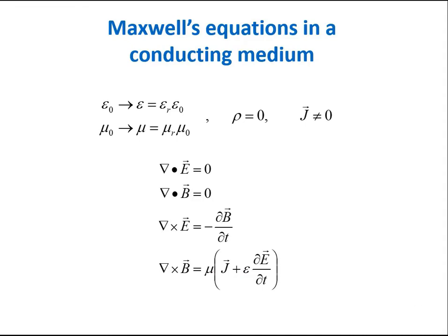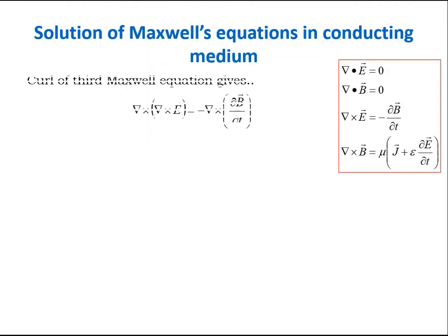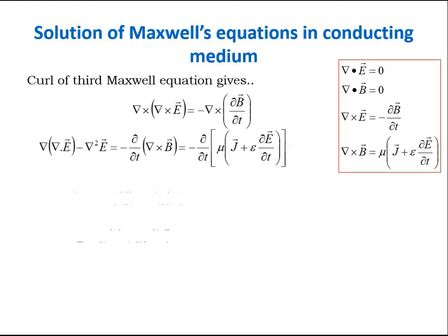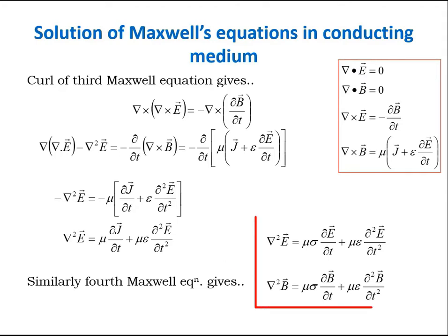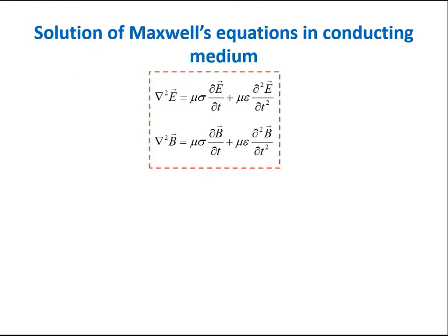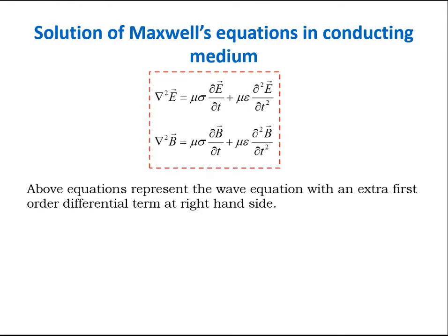Now to solve Maxwell equations in conducting medium, we follow the same method as we followed in case of free space. And that is, take curl of curl equations. Third curl equation gives this and this. Here J can be replaced by sigma E for conductor. So the final equation for electric field is this. Similarly, for magnetic field, the fourth Maxwell equation gives this equation. These are two equations for E and B containing double derivatives with respect to time and the space. Since these are the wave equations, the solutions to them will be the wave solution of E and B like we had in case of free space and dielectric medium.